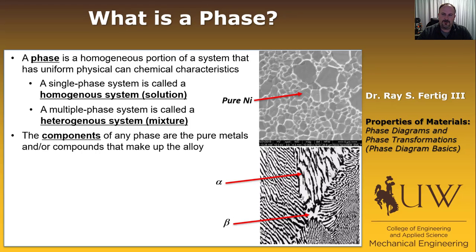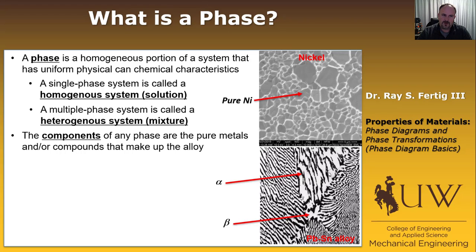The components of any phase are the pure metals or compounds that make up the alloy. In the case of the top image, the component is just nickel — very simple. In the case of the bottom, it's a lead-tin alloy, so the components of both the alpha and the beta phase are lead and tin.